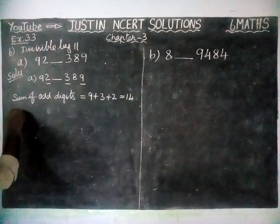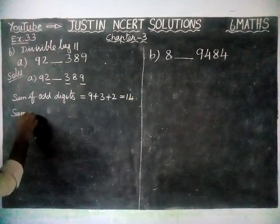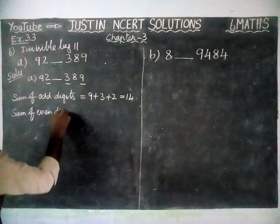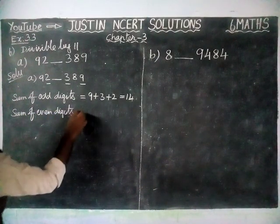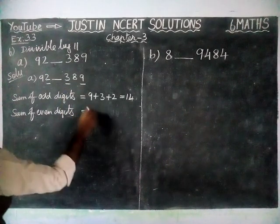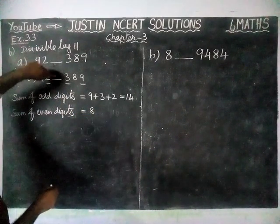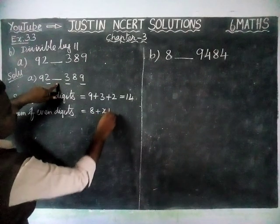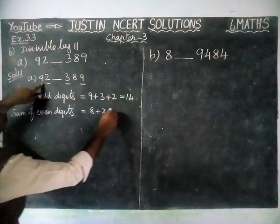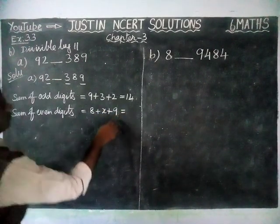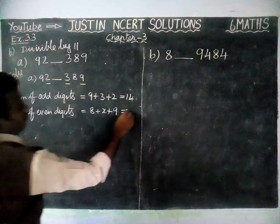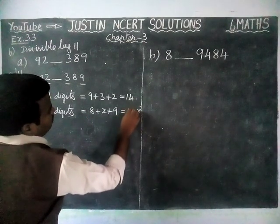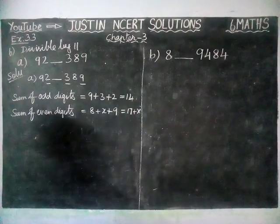Next, the sum of even-position digits. The even-position digits are 8, the blank (which we take as x), and 9. So the sum of even digits is equal to 8 plus x plus 9, which equals 17 plus x.